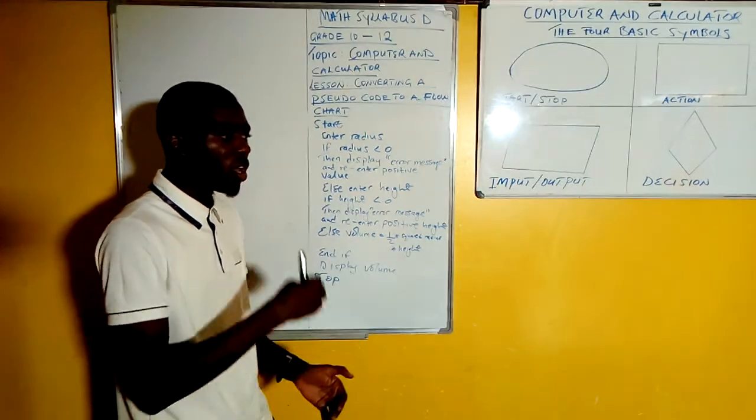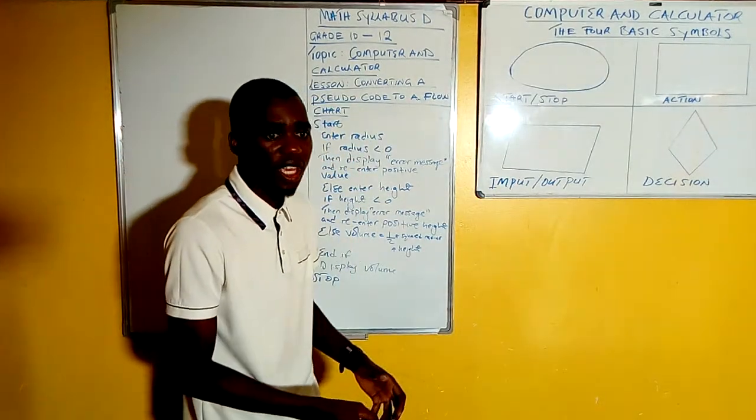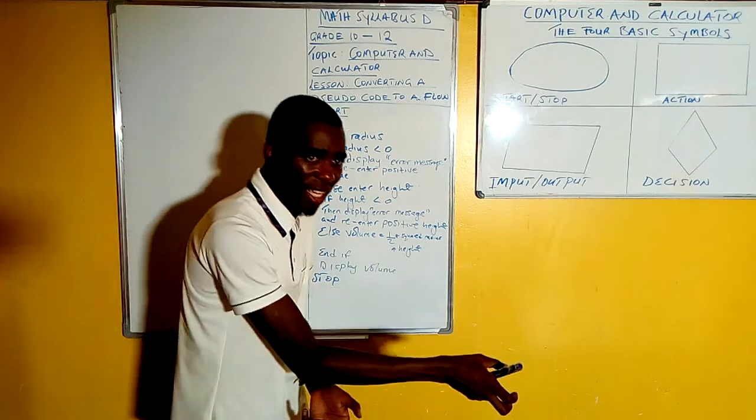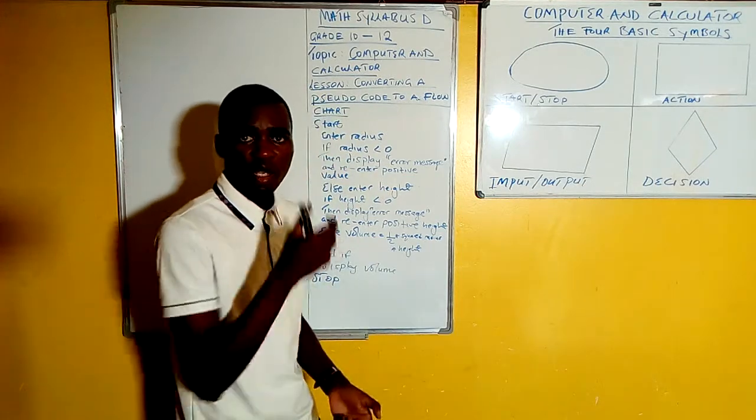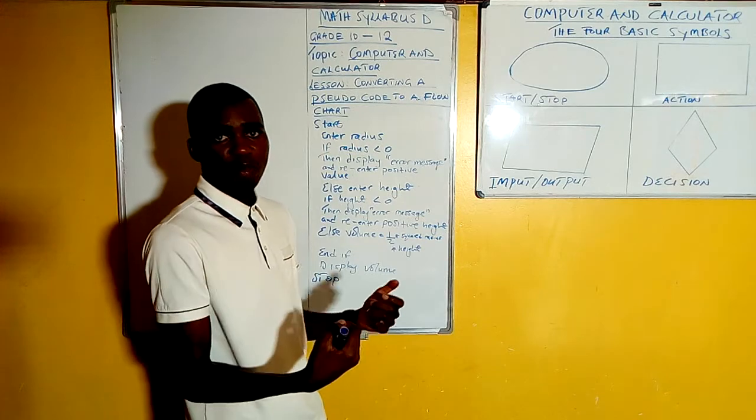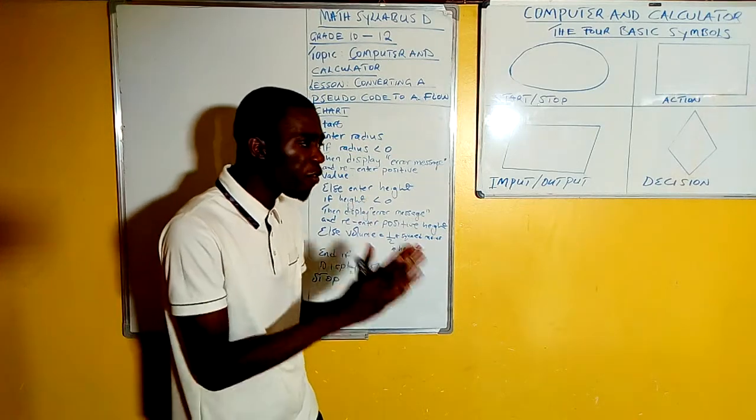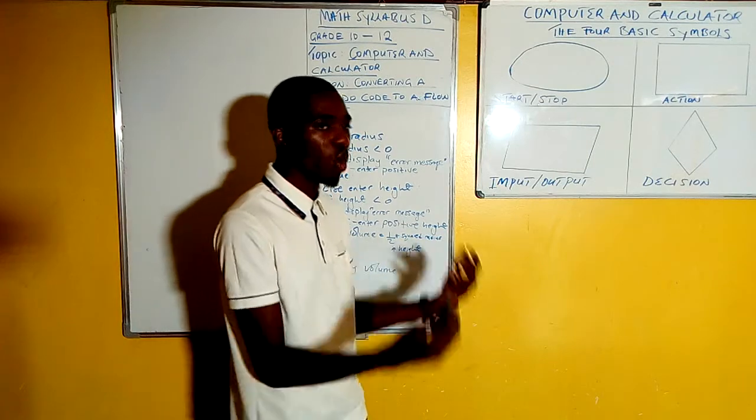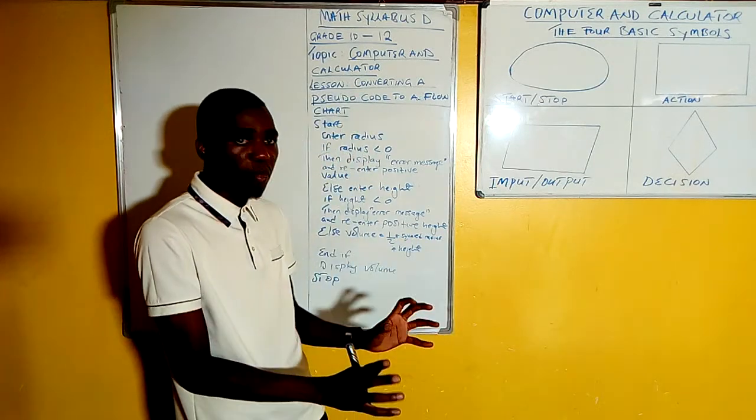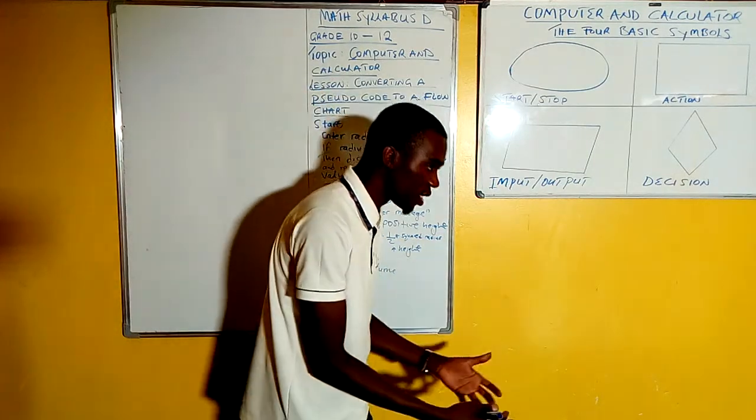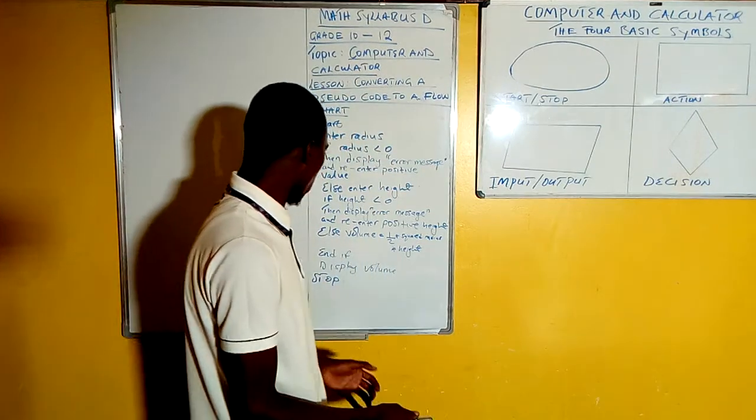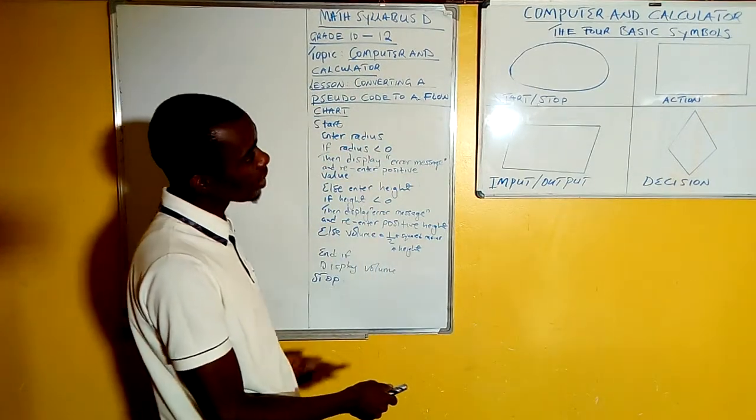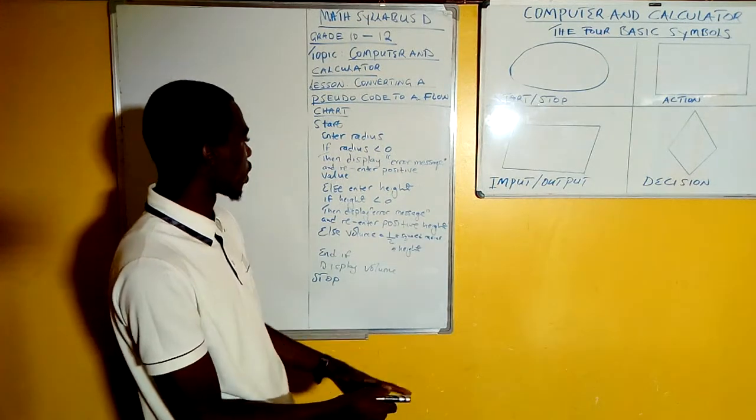In simpler language, a step-by-step instruction that can be used to perform an action. For example, if you are trying to show someone how to turn on a TV, you tell them plug in, get the remote, press the on button, sit back, relax. If people follow those instructions, they will be able to successfully turn on the TV and watch. That is just an example scenario of what a pseudocode is.